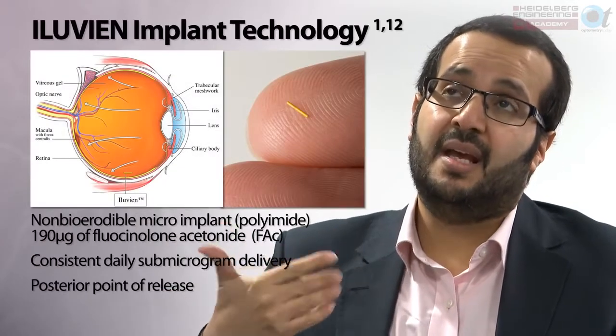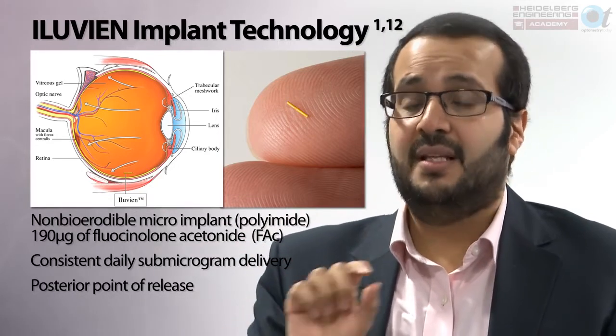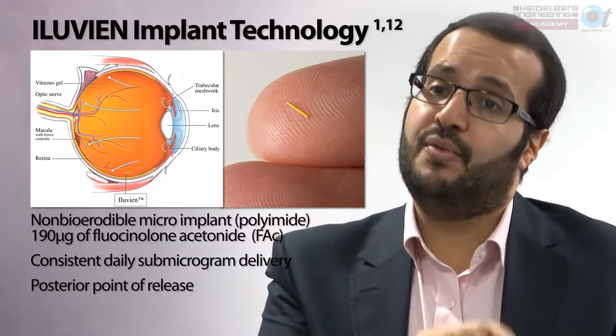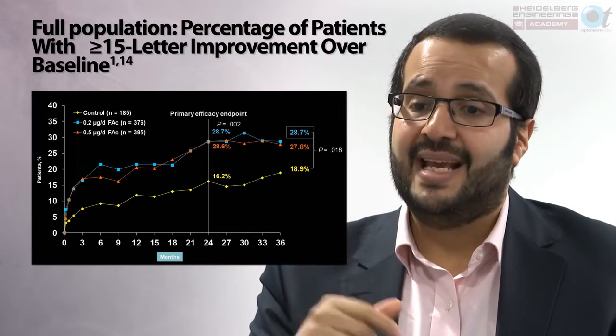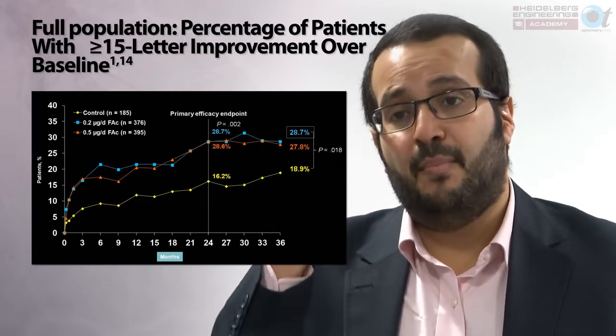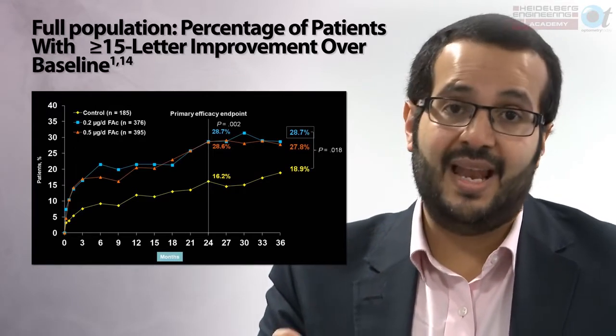More recently, sustained delivery implants provide steroid over three years with similar gains in vision. The implant Iluvien, approved in the NHS as of December of last year, is injected into the eye and releases sub-microgram doses of steroid consistently over three years. About 30 to 40% of patients gained 15 letters — three lines — in vision: real, meaningful improvement sustained for three years. There are now fantastic treatments for diabetic maculopathy.